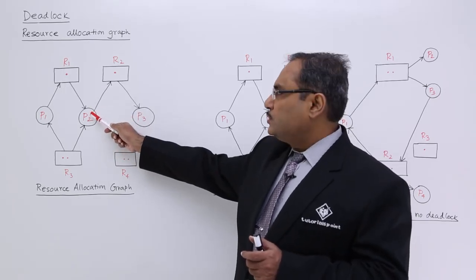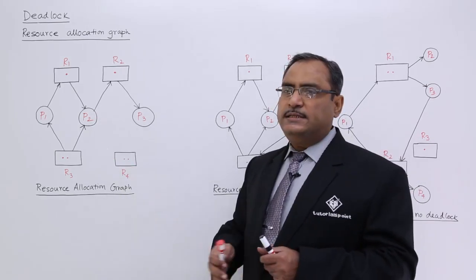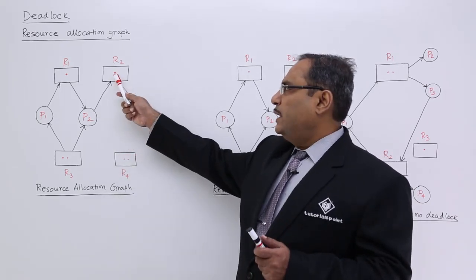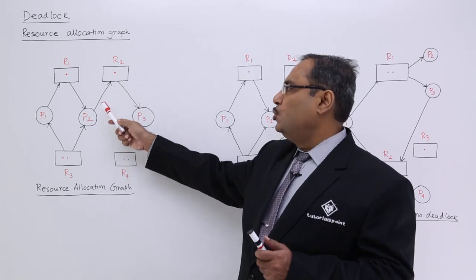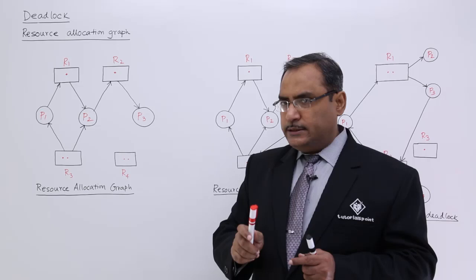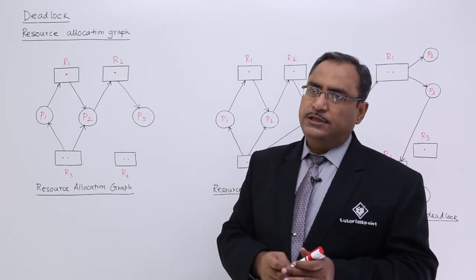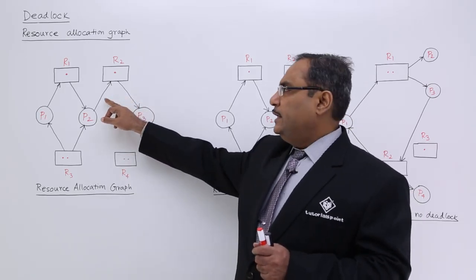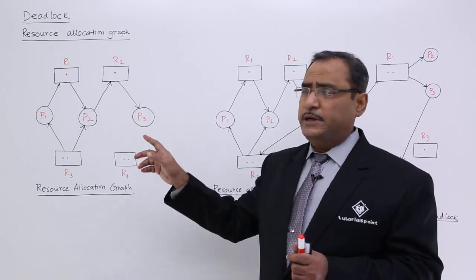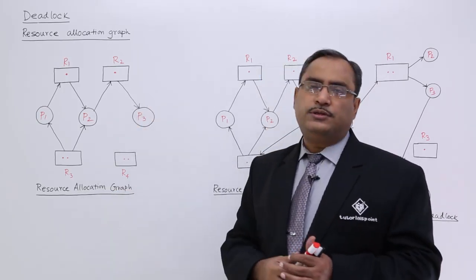Whenever an edge is directed from a process to a resource, it is known as a request edge. A request edge means the process has placed a request to get one of the instances of that resource — for example, a process requesting an instance of R2. So the four components are: circular diagrams for processes, rectangular boxes with dot instances for resources, allocation edges, and request edges.